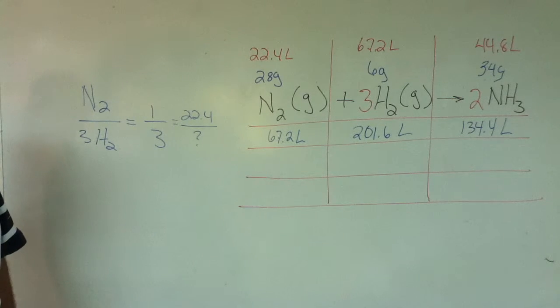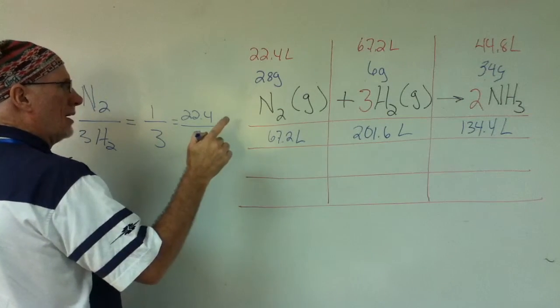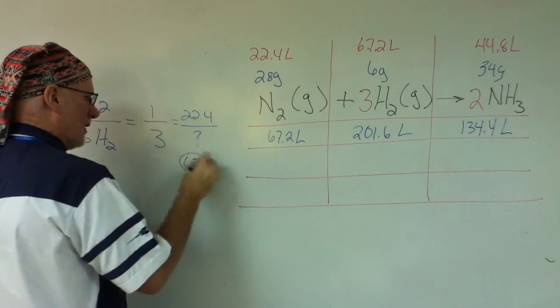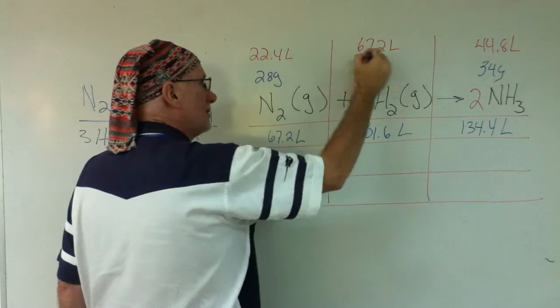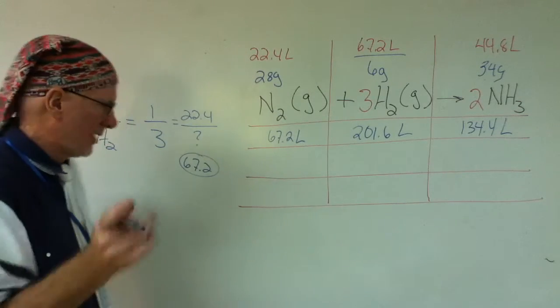If 1 mole is 22.4, what's 3 moles? 67.2. In other words, look. And that's how we got this. Right? 1 to 3. Correct?